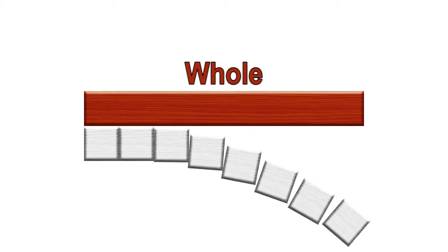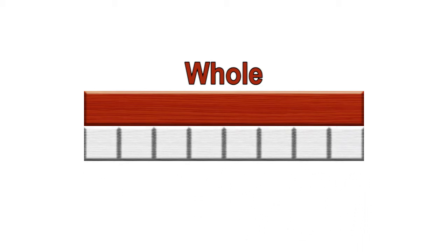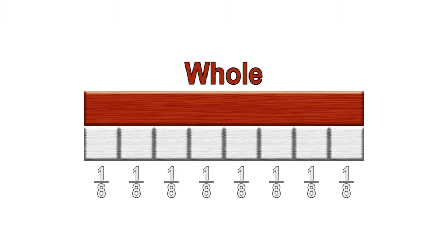Next, let's label the brown rod as the whole. Here, we have partitioned the whole into eight pieces. Each piece represents the unit fraction one-eighth. Since the whole requires eight one-eighth sized pieces, we can write our addition equation with eight addends, each being the unit fraction one-eighth. Eight one-eighth sized pieces added together is equal to eight-eighths.